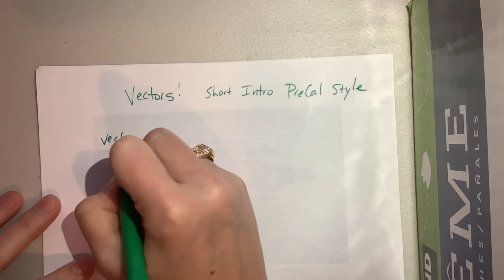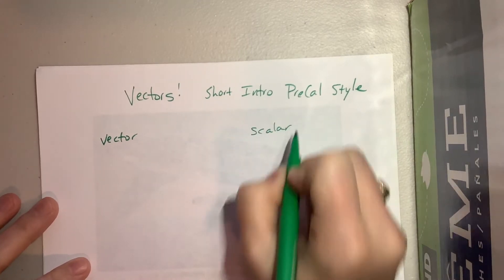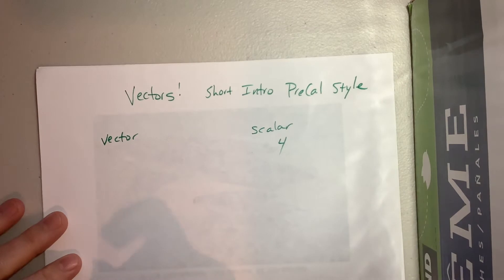Okay, so you can have a vector and you can also have a scalar. Okay, so a scalar is just a number like the number four. It has a magnitude but it has no direction.